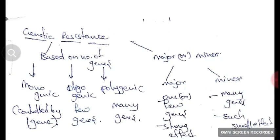Genetic resistance is divided based on number of genes and major or minor genes. Based on number of genes, it is divided into monogenic resistance, oligogenic resistance, and polygenic resistance.